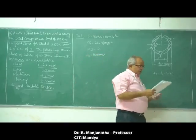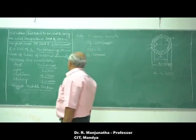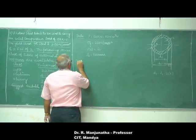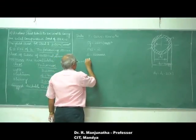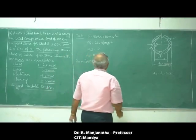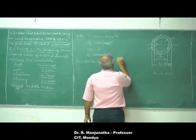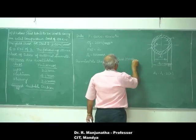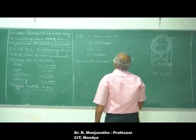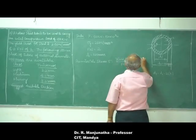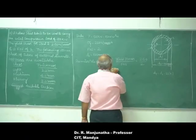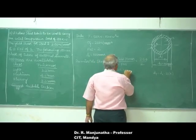Since the factor of safety is given, we need to find the permissible stress. The permissible stress σ is equal to the yield stress divided by the factor of safety — that is 250 divided by 2 — so the permissible stress σ is equal to 125 newton per mm square.